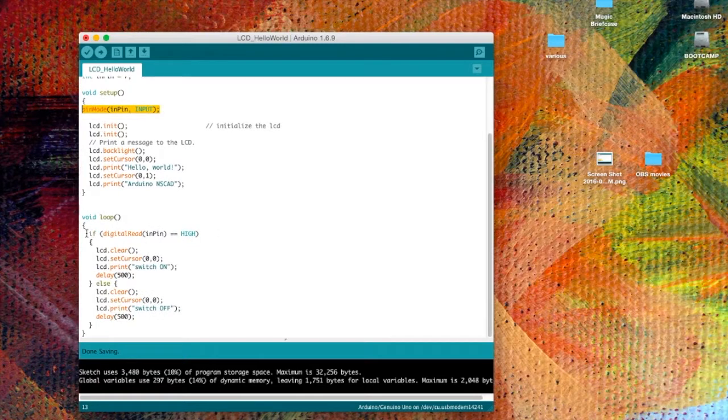In the loop I'm testing for the state of the input pin. If it's high I have an if statement, an if-else statement actually. So if the pin is high then I tell the LCD to clear, I set the cursor to 0,0 and then I print 'switch on'. Finally I'll delay it by 500 milliseconds. If the pin is low then the else command is invoked where the same thing basically happens except that it will print 'switch off'.